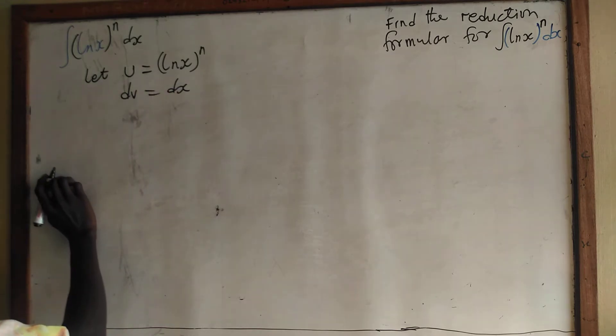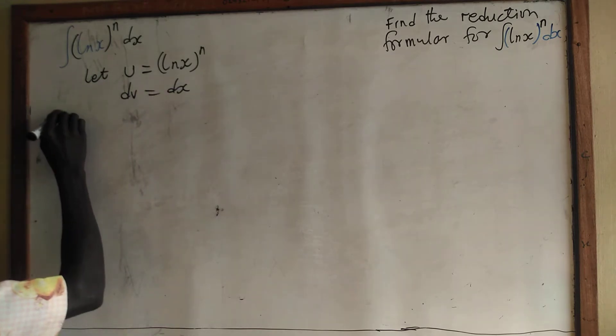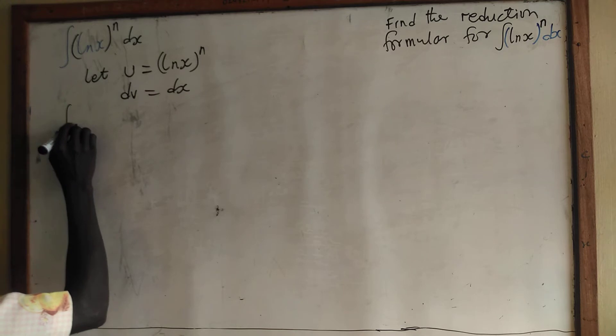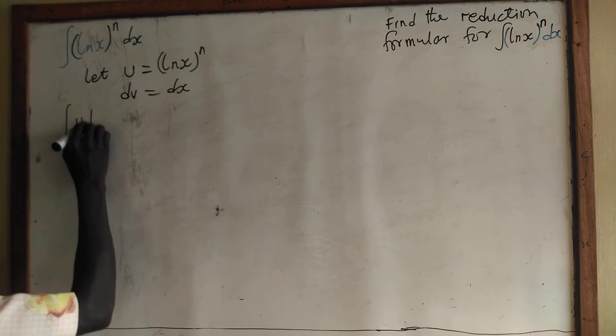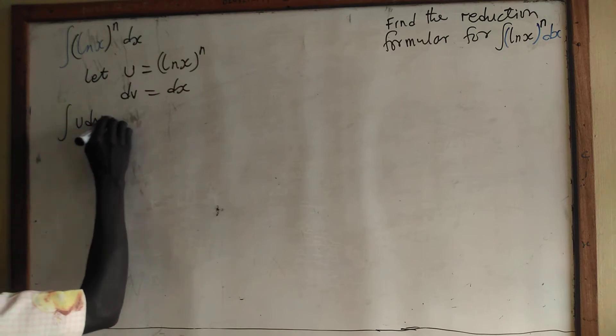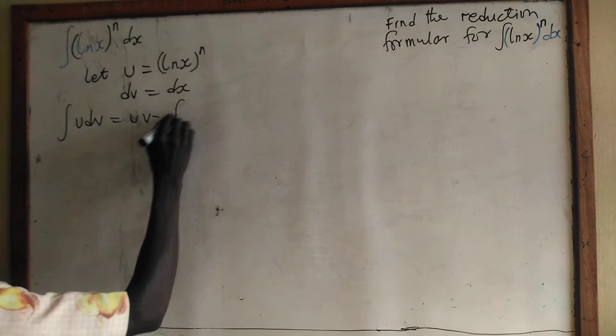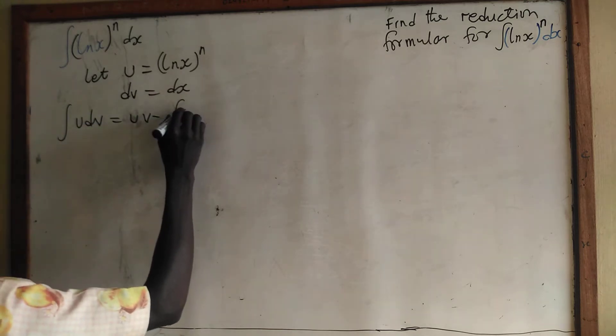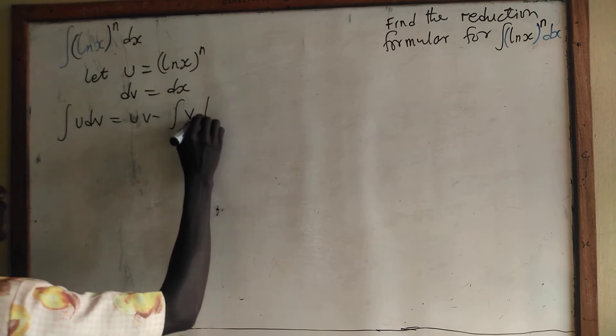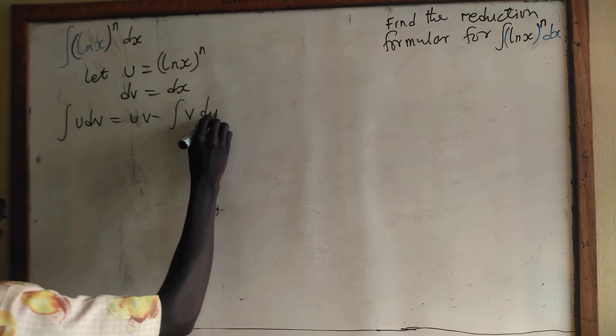From integration by parts we are going to write the integral of u dv is equal to u·v minus the integral of v du.